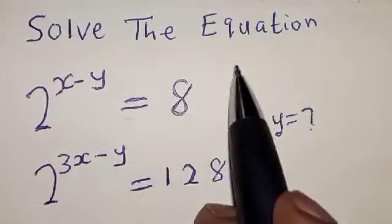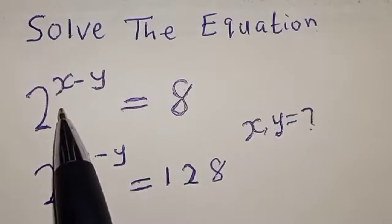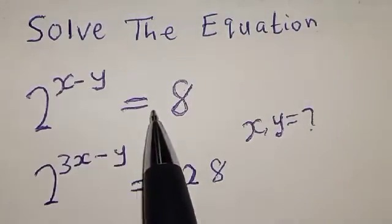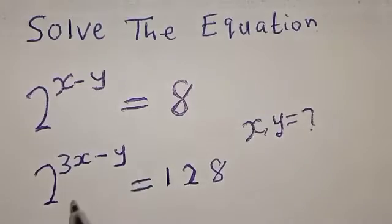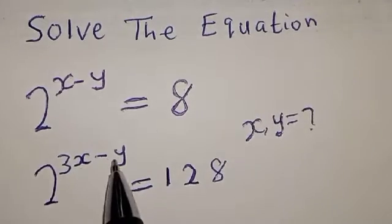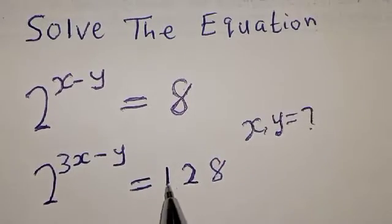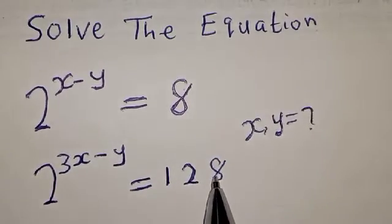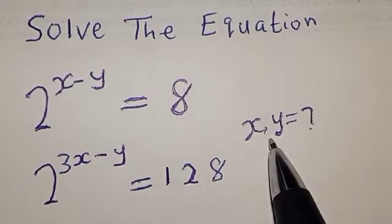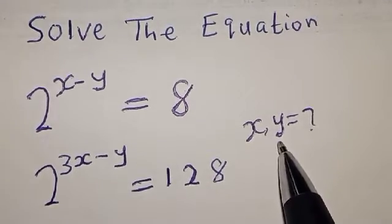Solve the equation. 2 raised to power x minus y is equal to 8. Also, 2 raised to power 3x minus y is equal to 128. What is the value of x and y?